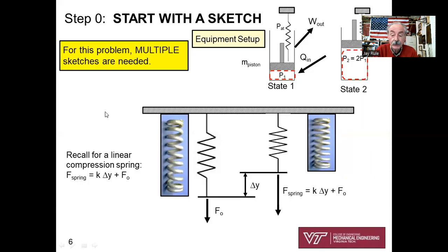Let's start with a sketch. We're going to need multiple sketches. I've started with my equipment setup. I've shown my initial state with a spring with an initial known spring force pushing down. I've got P atmospheric and I've also got Mg, the weight of the piston pushing down on this gas that's pushing back up with the pressure. And then I'm showing heat in, I'm showing work out, and I'm showing a second state where the pressure has doubled and the volume has tripled.